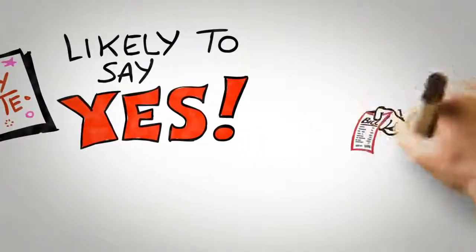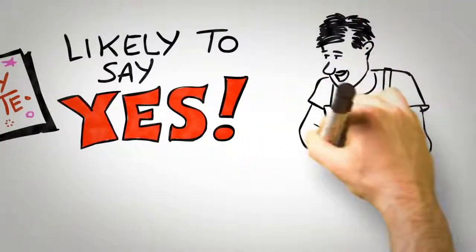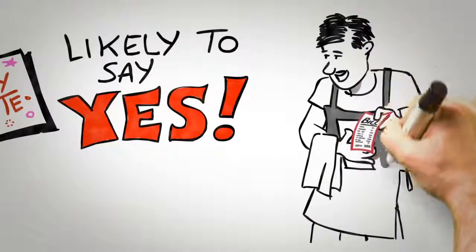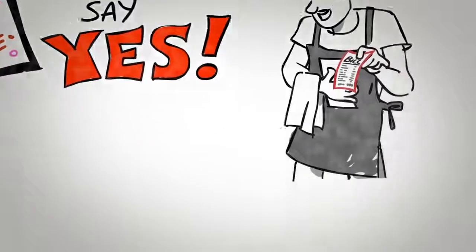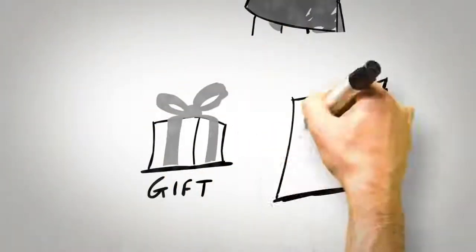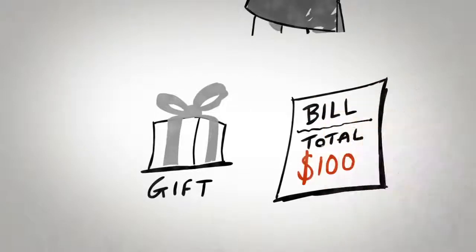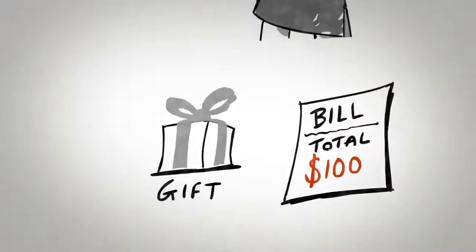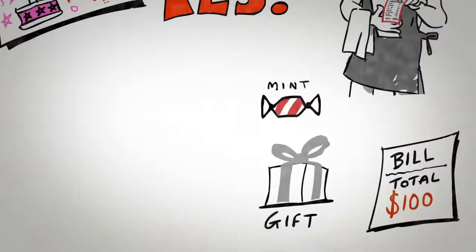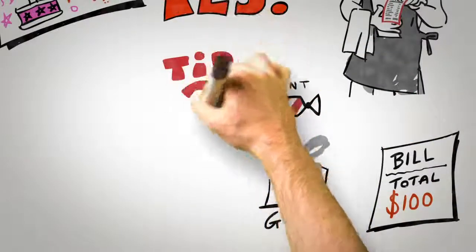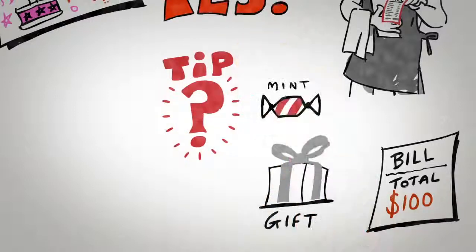One of the best demonstrations of the principle of reciprocation comes from a series of studies conducted in restaurants. So, the last time you visited a restaurant, there's a good chance that the waiter or waitress will have given you a gift, probably at about the same time that they bring your bill. A liqueur, perhaps, or a fortune cookie, or perhaps a simple mint. So here's the question: does the giving of a mint have any influence over how much tip you're going to leave them? Most people will say no, but that mint can make a surprising difference.